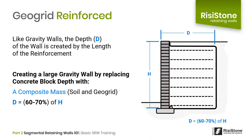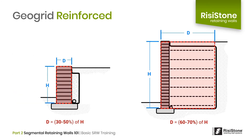The depth of a grid reinforced wall is created by the length of the reinforcement. Typically, the length of reinforcement is between 60% to 70% of the wall height. Compared to true gravity walls, which require a depth ratio of 30% to 50% of wall height, geogrid reinforced walls require a depth ratio of 60% to 70%. Although grid reinforced walls are generally more economical, when we are short on space we sometimes need to use a gravity wall just to fit it into the site.